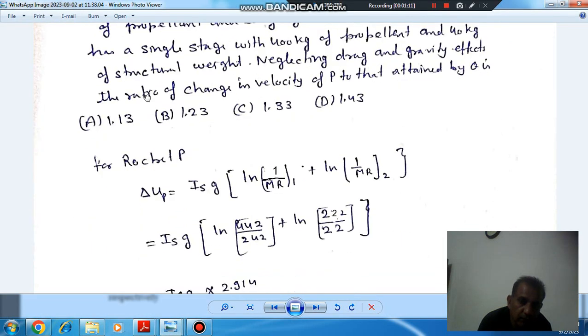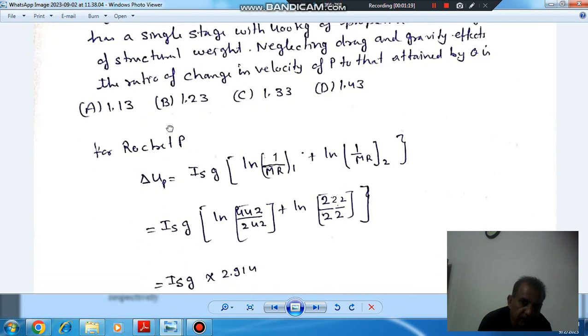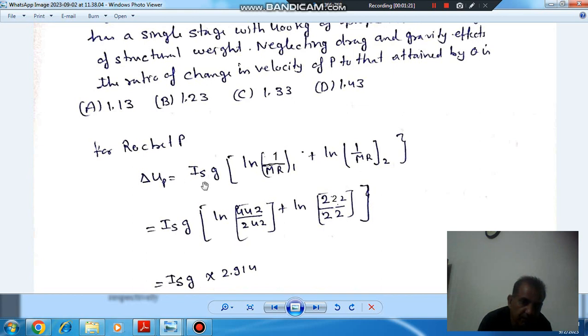For rocket P which has two stages, the change in velocity is given by IsG (Is is specific impulse, G is acceleration due to gravity) plus ln(1/mass ratio of first stage) plus ln(1/mass ratio of second stage).